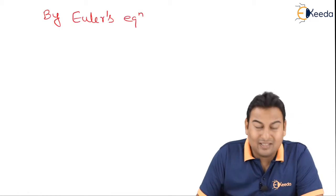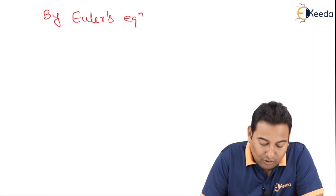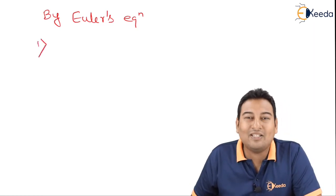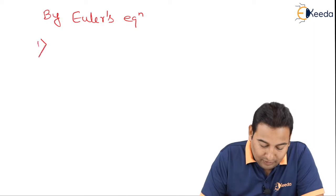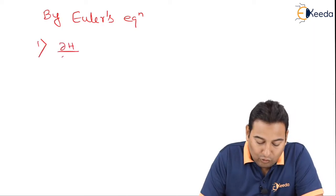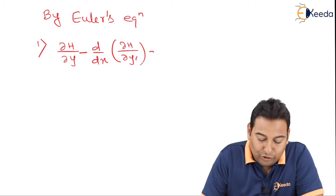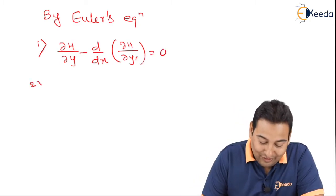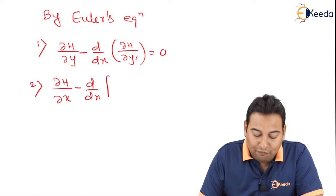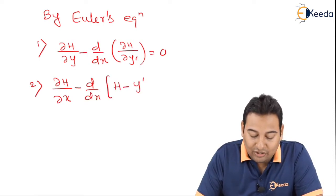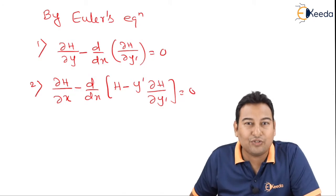By Euler's equation, you convert f into h — the rest of the story remains the same as Type 1. The first Euler equation was: ∂f/∂y − d/dx(∂f/∂y') = 0. Here it remains the same but f is replaced by h: ∂h/∂y − d/dx(∂h/∂y') = 0. This is equation number 1. Equation number 2 is: ∂h/∂x − d/dx(h − y'·∂h/∂y') = 0. These are the two equations to remember.